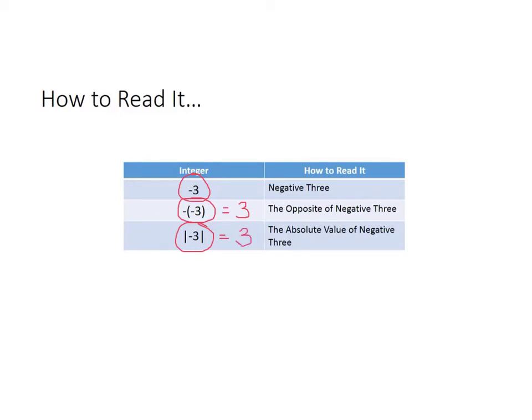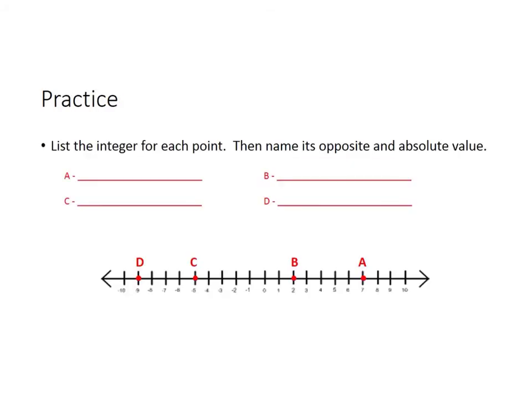Remember, opposites are numbers that are the same distance away from zero, and the absolute value is the distance away from zero. Let's see if we can practice some of these together. We want to list the integer for each point, then name its opposite and its absolute value.